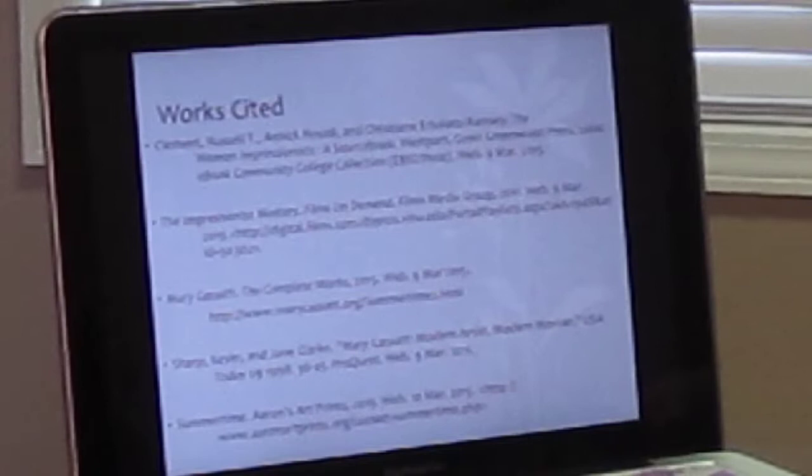This is my works cited. This first one is an e-book that I found from the Sheik Library. The next one is my video clip, and I found that from the Sheik Library. Mary Cassatt also has a webpage dedicated to her, and I found pictures of the paintings and then a little bit of the analysis of her painting there. This one is also an article I found from the Sheik Resource Library, which is actually where I got most of my information from. And then this bottom one is an analysis of the painting that I found on the web.